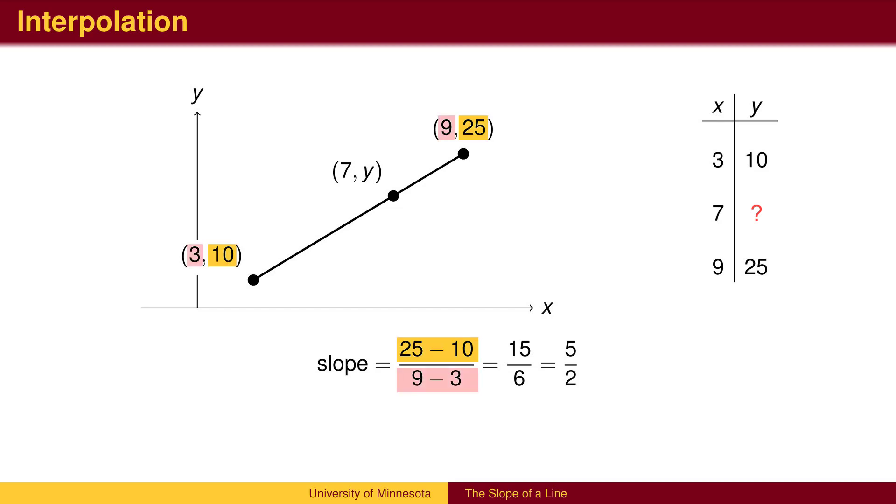First, we use two known points to find the slope. Then, we use the new point with either known point and solve to find the unknown value.